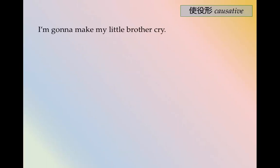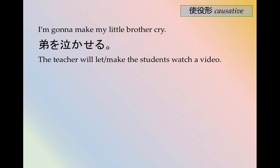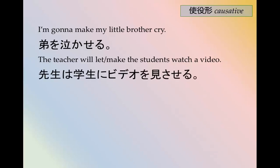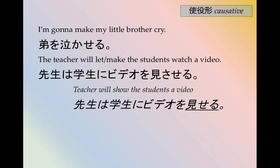Let's practice a few more. I'm going to make my little brother cry — 弟を泣かせる。 The teacher will let or make the students watch a video — 先生は学生にビデオを見させる。 This definitely implies allowing or forcing. Because if you want to say 'show it to someone' you use 見せる — a special verb. 見させる and 見せる look very similar: one is to show, the other is to make someone watch.